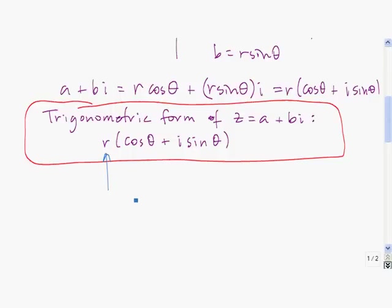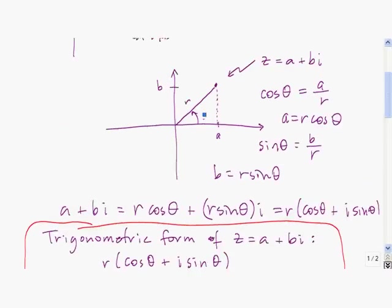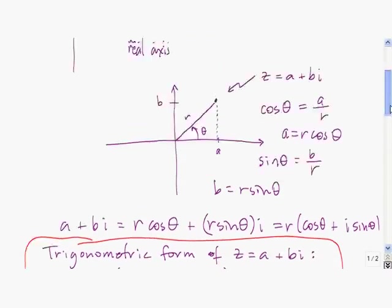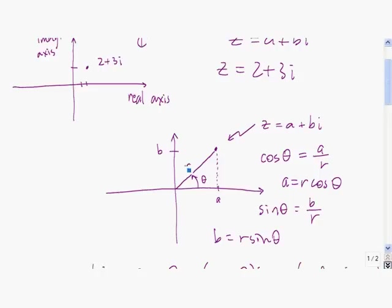The number R is called the modulus of the complex number — that is just the distance between the complex number and the origin. Theta is called the argument of the complex number. From the diagram, R equals the square root of A squared plus B squared, and tangent of theta equals B divided by A.